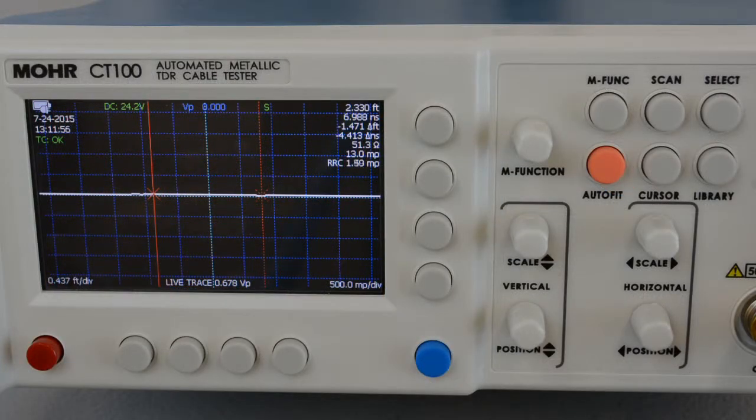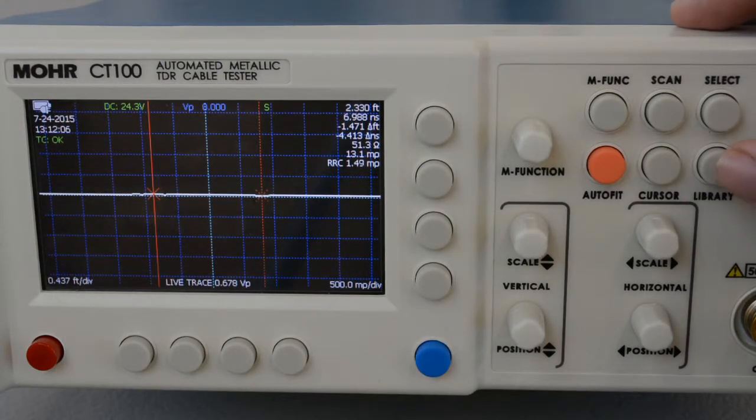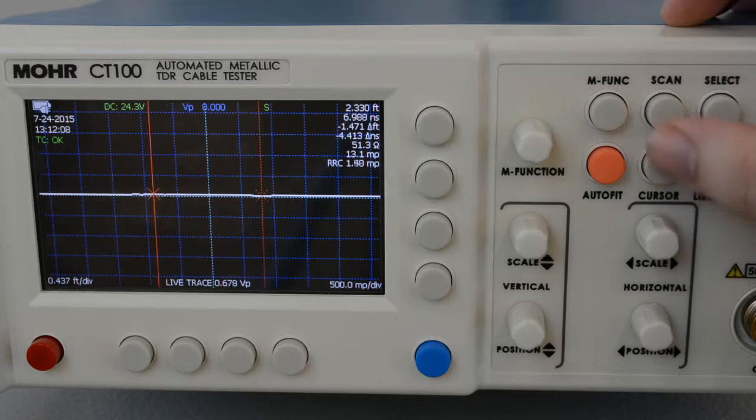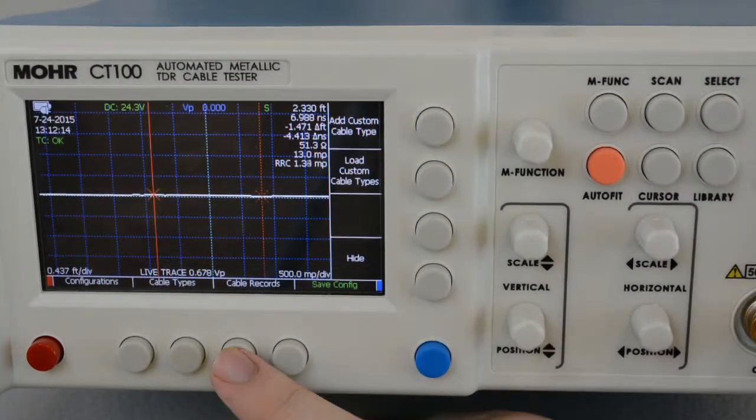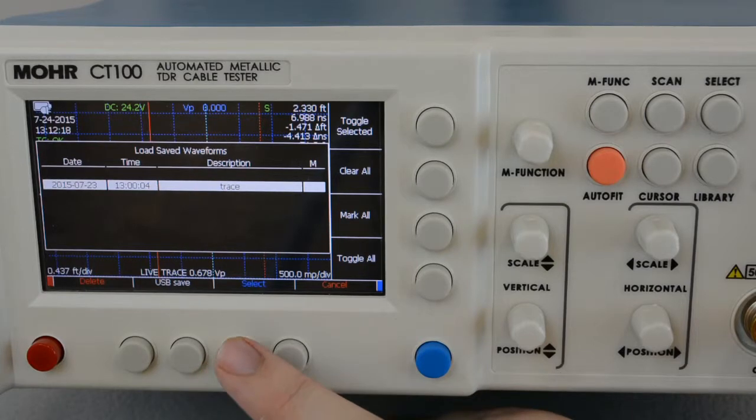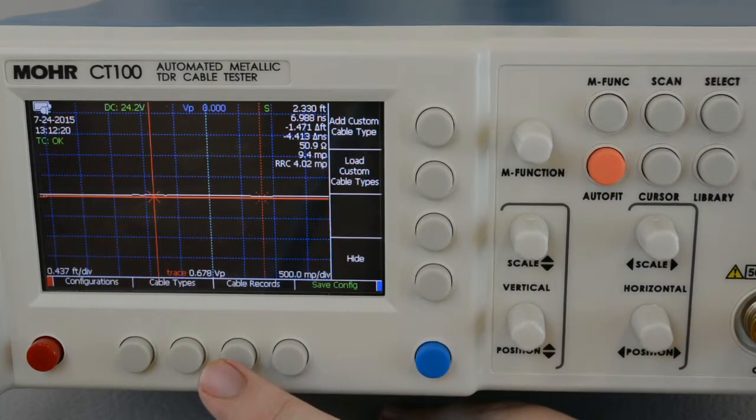Now I'm going to show you another application of the difference trace. The CT100 is currently scanning two cables that are connected via connector. I'm going to load a scan of the cable from when I know the connector was good. Now, I've loosened the connector just a half turn, so we're going to see if the CT100 can recognize that.